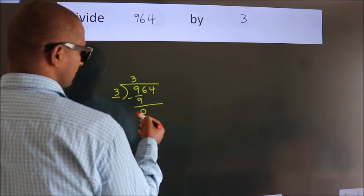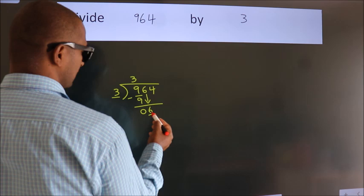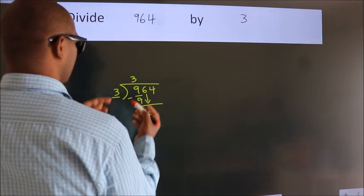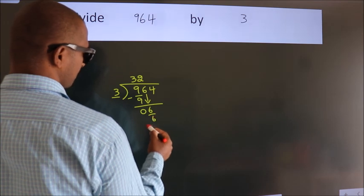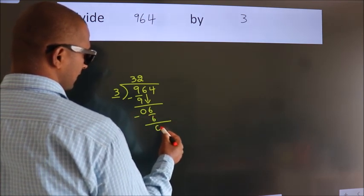After this, bring down the beside number. So, 6 down. When do we get 6? In 3 table. 3 2's, 6. Now, we subtract. We get 0.